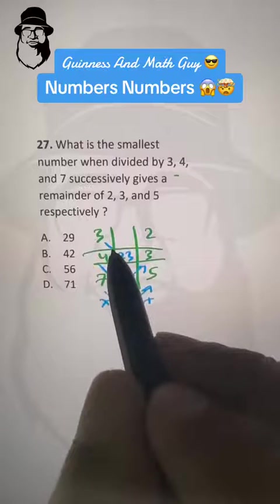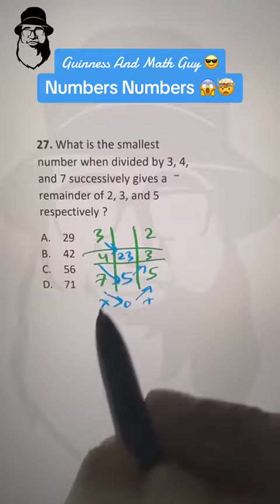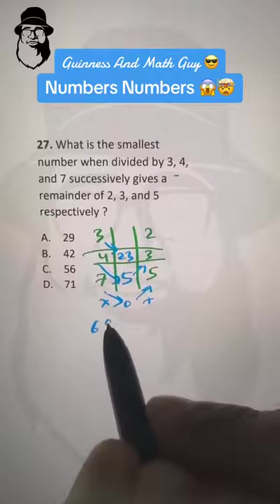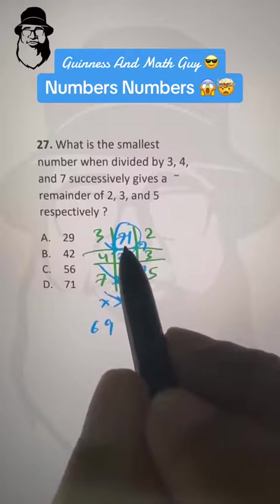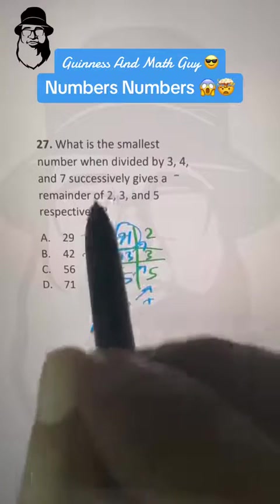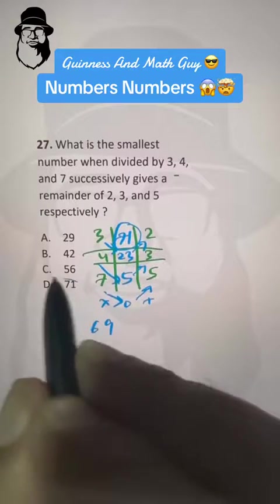And then same process. 3 times 23: 3 times 20 is 60, 3 times 3 is 9, making 69. Plus this 2 will make it 71. That is the smallest number that fulfills these conditions. And that's our answer, choice D.